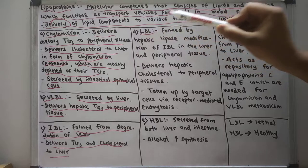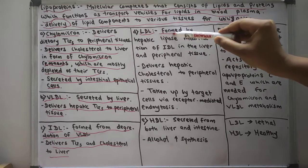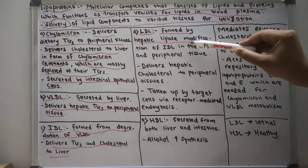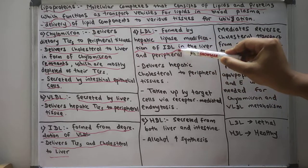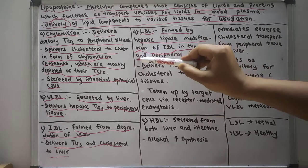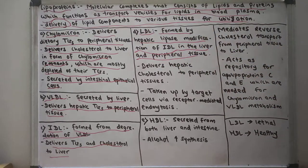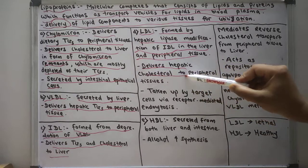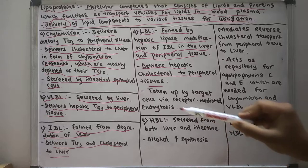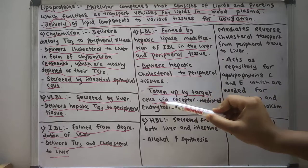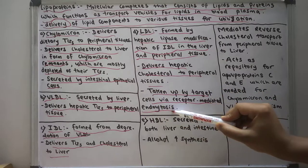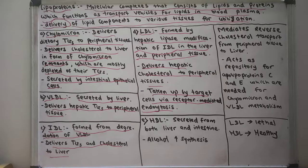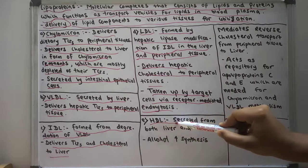Low density lipoprotein (LDL) is formed by hepatic lipase modification of the intermediate density lipoprotein in the liver and peripheral tissues. LDL delivers hepatic cholesterol to the peripheral tissues, and it is taken up by target cells via receptor-mediated endocytosis.